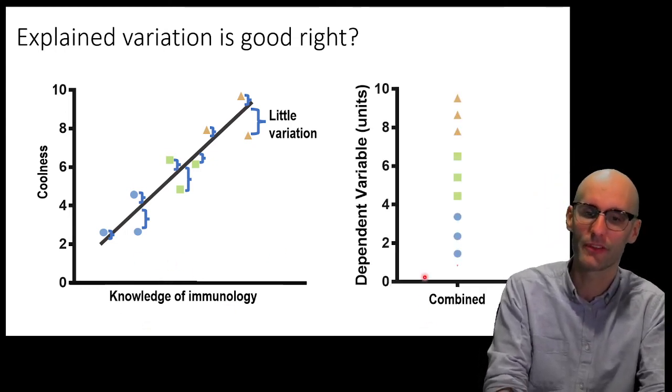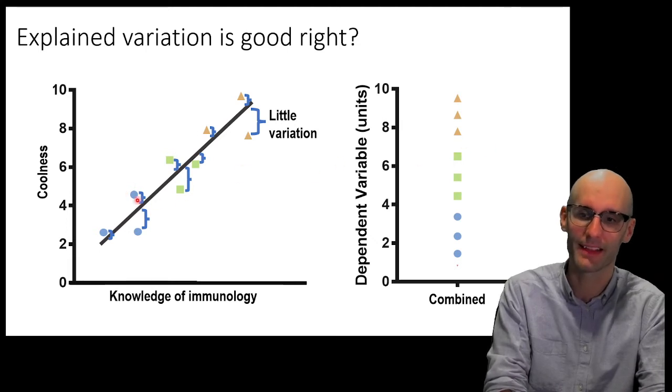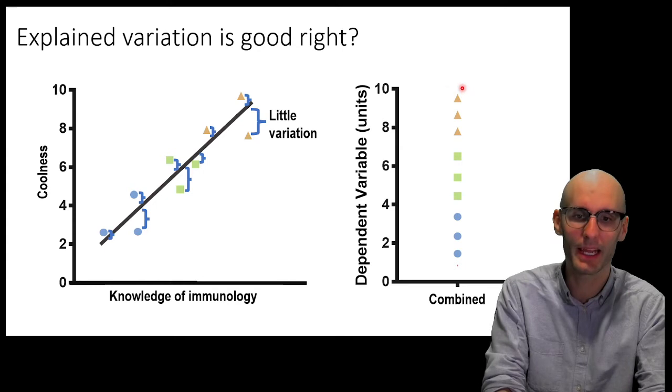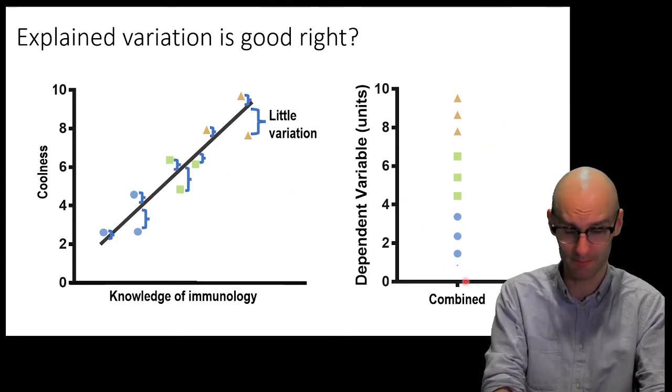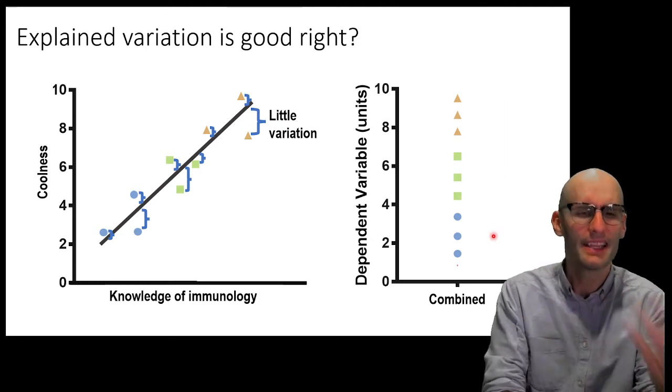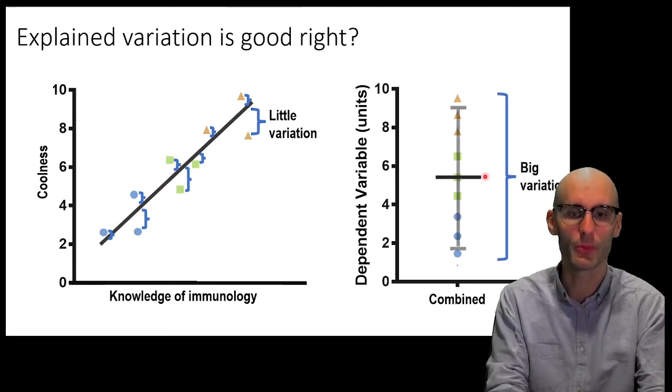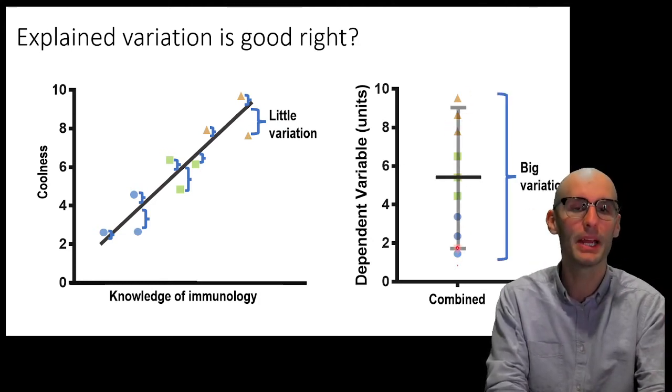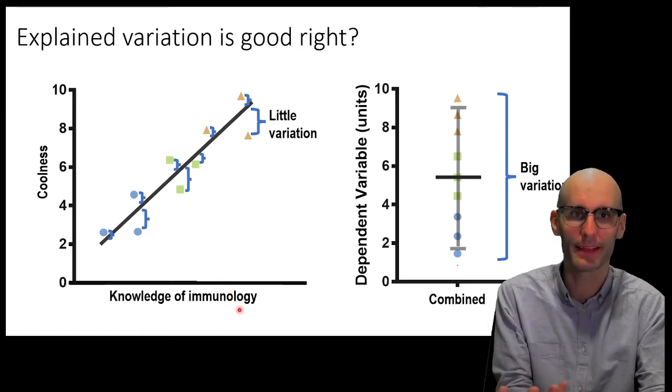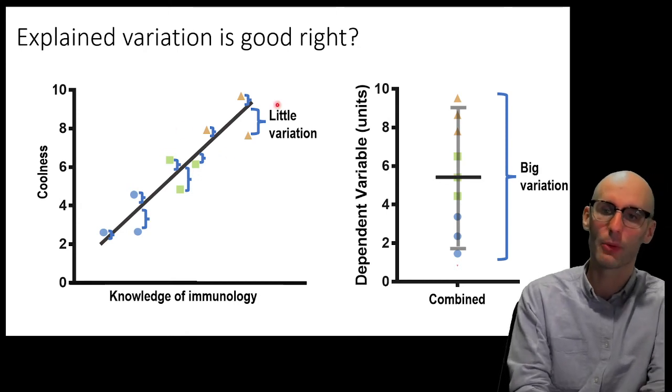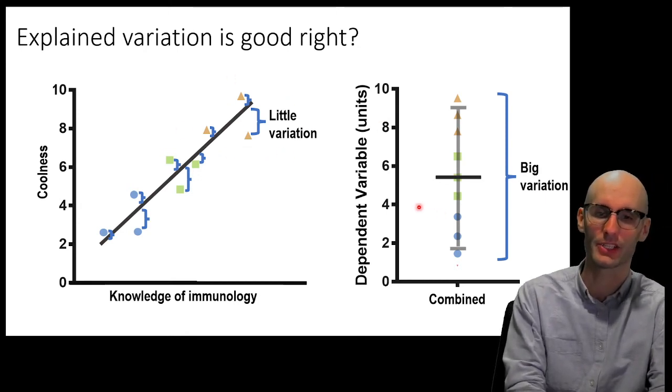Now, what if we got rid of our explanatory variable and we just put all the data together? So, this blue dot corresponds to that blue dot, green to green, pink to pink. You can see this is that exact data just over here. But now I've combined it. Now, let's look at the variation. The variation away from the mean is huge. We've got big variation on this side. Without our explanatory variable, without our statistical model, we've got a big variation. And over here, we've got little average variation.